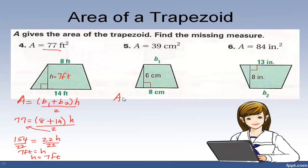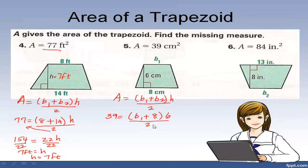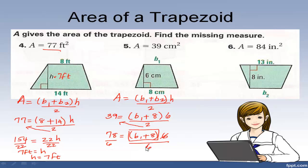For the second one, write our formula. Plug in all the information: area is 39, so 39 equals b sub 1 plus 8 times 6, all divided by 2. Cross multiply: 39 times 2 is 78, equals b sub 1 plus 8 times 6. Divide both sides by 6: 78 divided by 6 is 13, equals b sub 1 plus 8. Subtract 8 from each side, and b sub 1 equals 5.